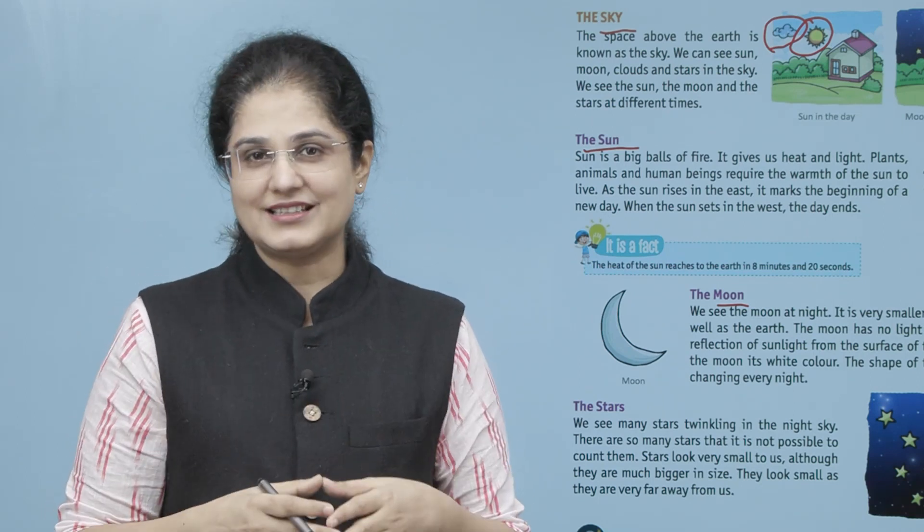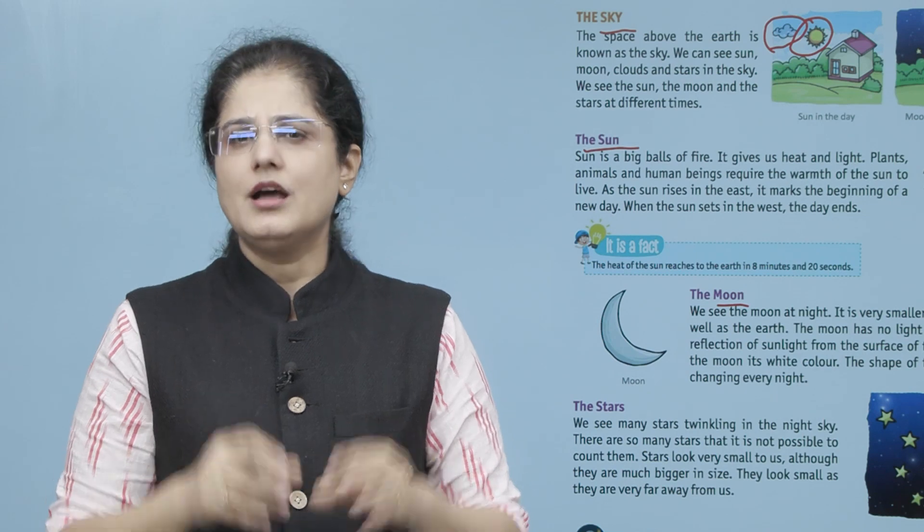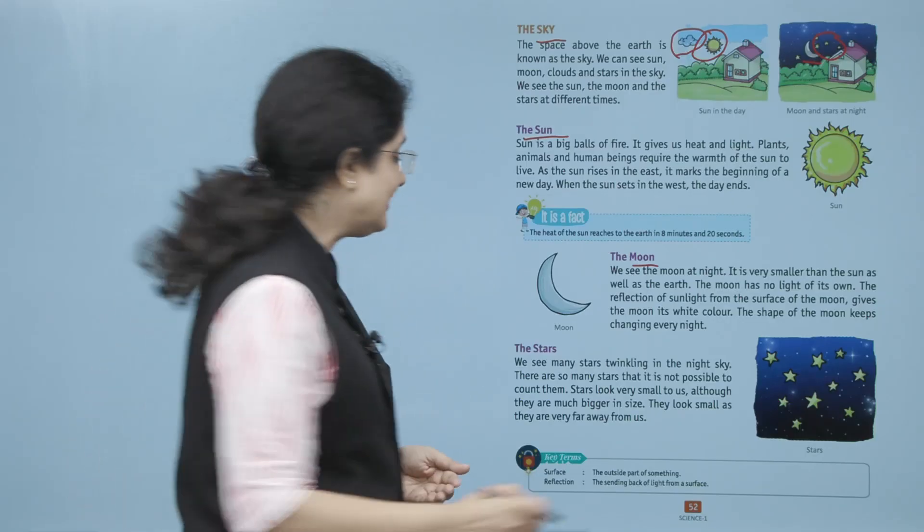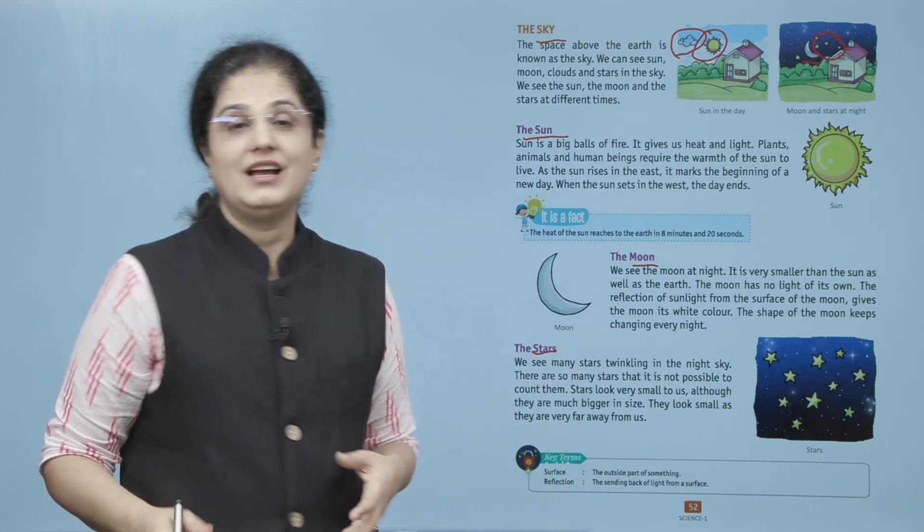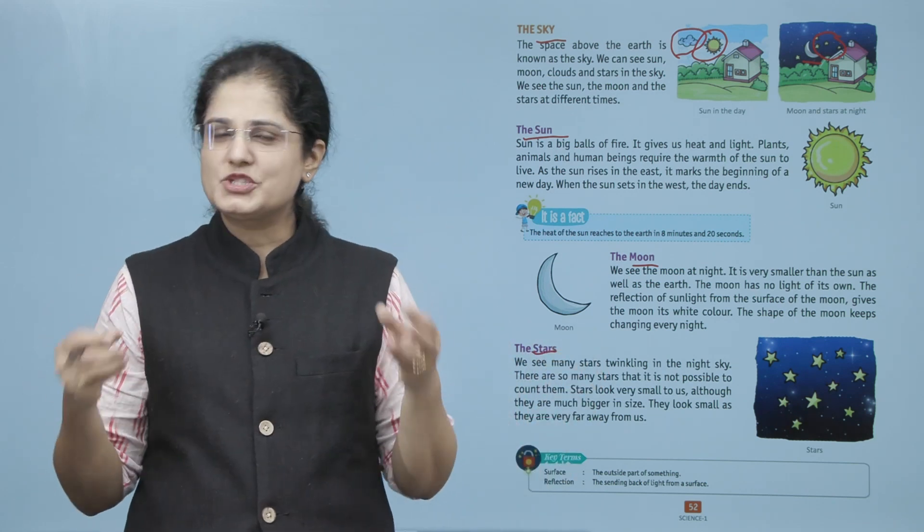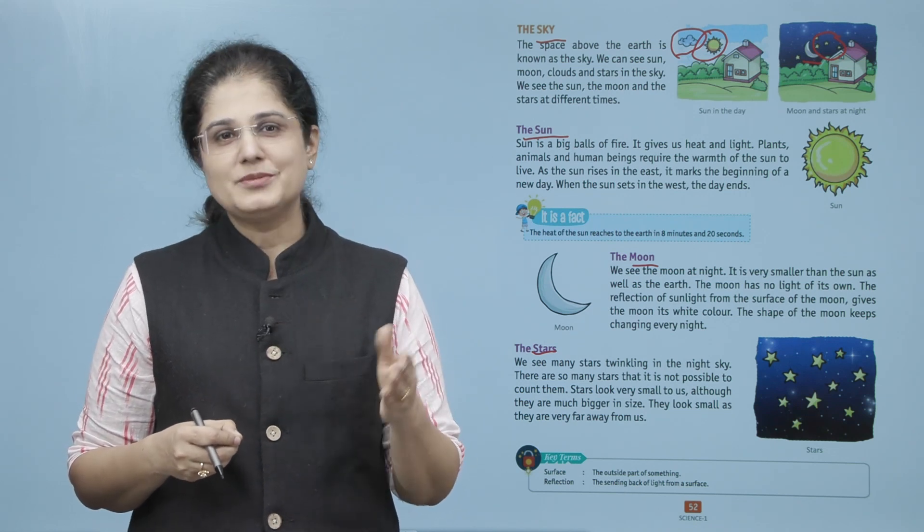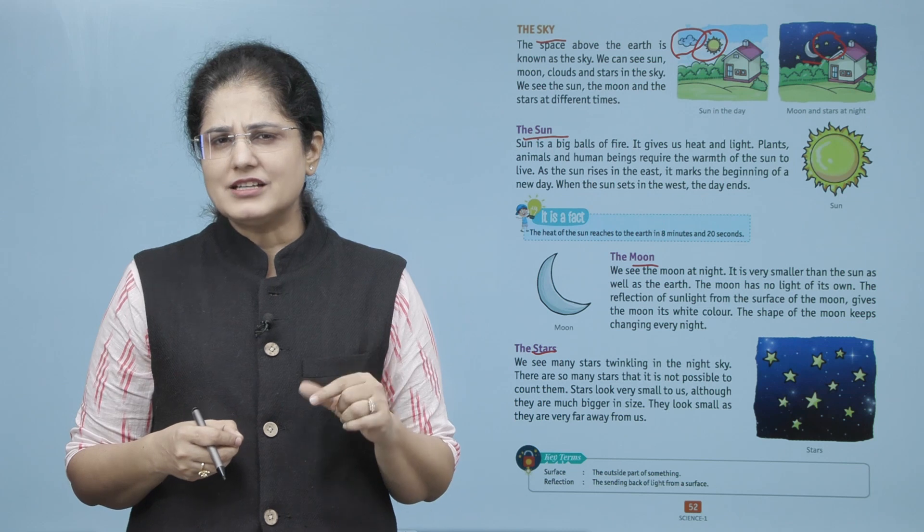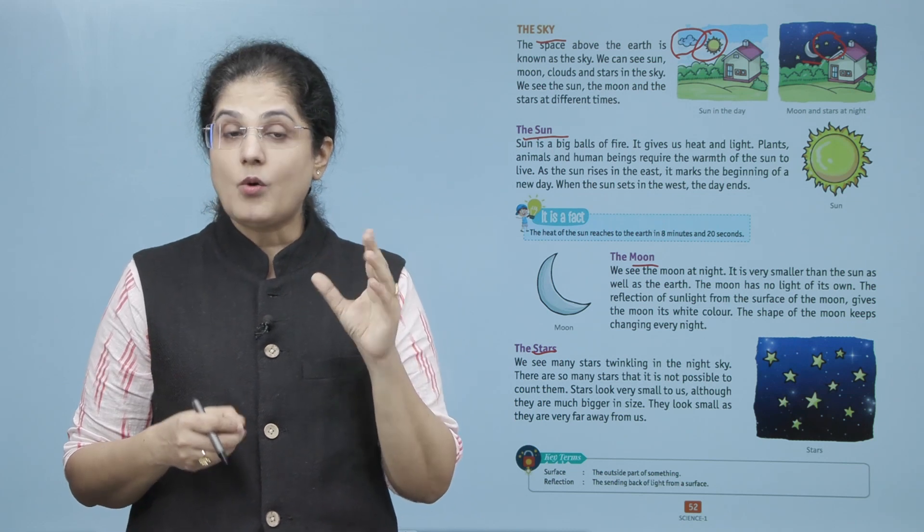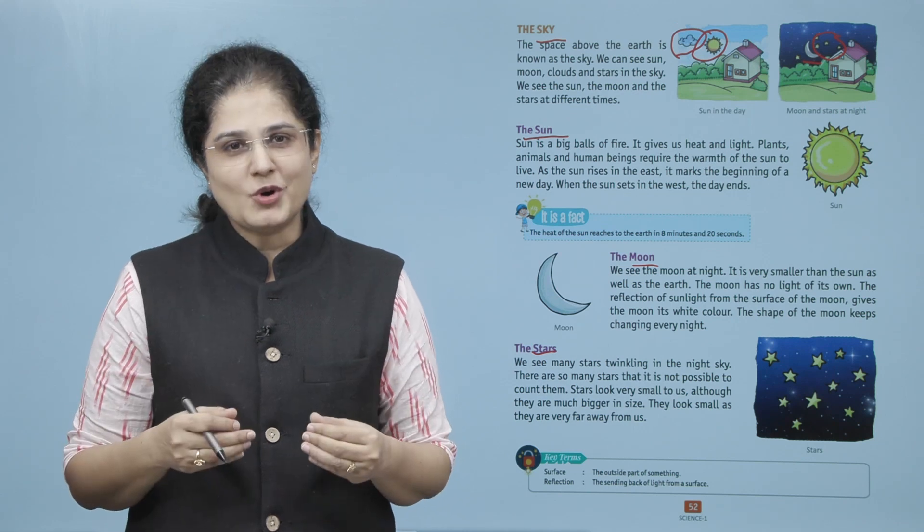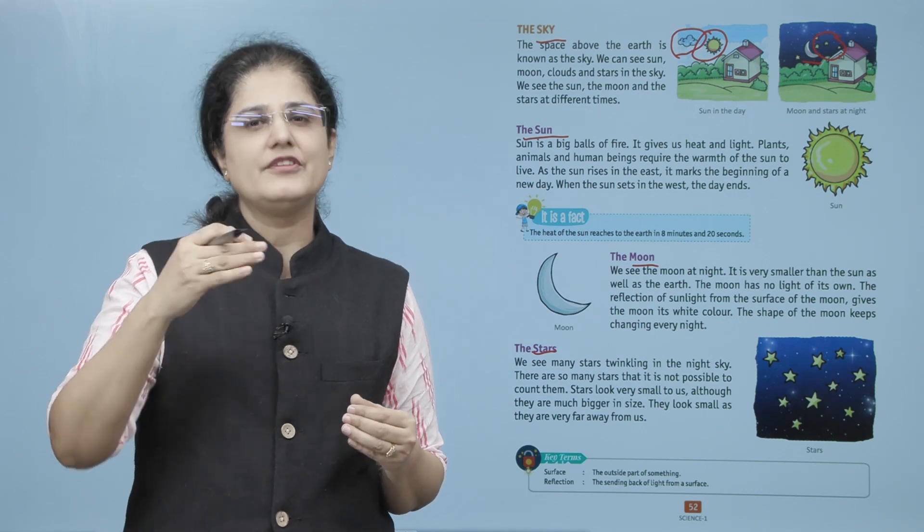Wo humein white color ka nazar aata hai aur har raat Moon ki shape change hoti hai. Let us now look at the Stars. We see many stars twinkling in the night sky. There are so many stars that it is not possible to count them. Stars look very small to us although they are much bigger in size. They look small as they are very far away from us.